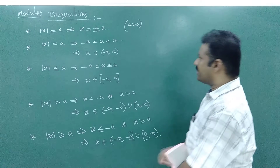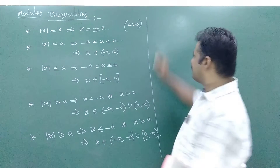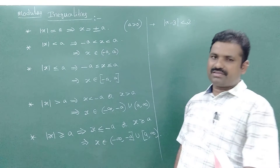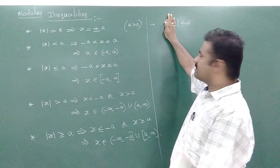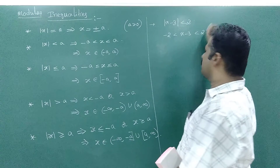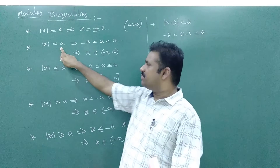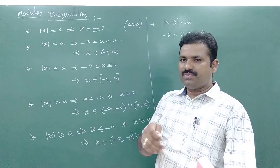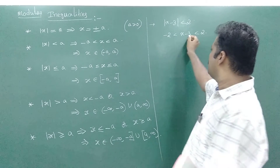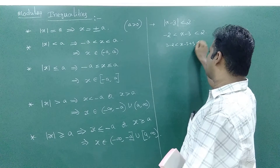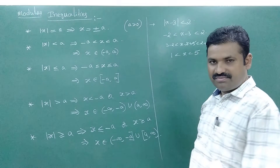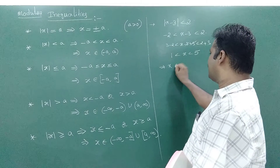Now suppose the problem is like this: mod of x minus 3 less than 2. Using the rule mod x less than a means minus a less than x less than a, we write: minus 2 less than x minus 3 less than 2. Adding 3 throughout: 3 minus 2 less than x less than 3 plus 2, giving 1 less than x less than 5.